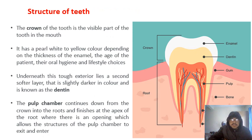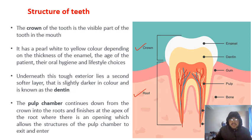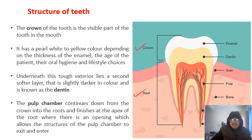Now let's see the structure of the teeth. It is basically divided into two sections: the crown section and the root section. The crown section is composed of enamel and dentine. The enamel is the yellowish-white part of the teeth which you can see in your mirror, but the root part is buried inside the gums. The color of the enamel is generally white or yellow, and this depends on the thickness of the enamel and the age of the person.